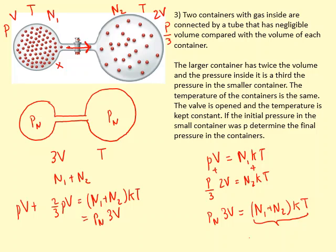So if I add up these two, the factors on the left hand side, I get 5 over 3 PV equals Pn 3V. Then I bring the 3 to the left hand side so I get 5 over 9 PV equals Pn V. The Vs cancel out, so the new pressure is equal to 5 over 9 times the initial pressure.